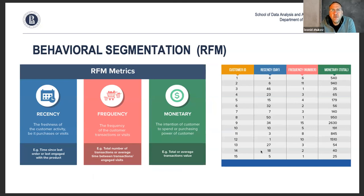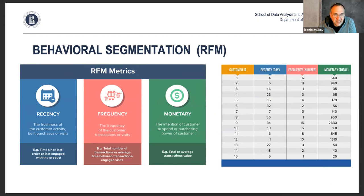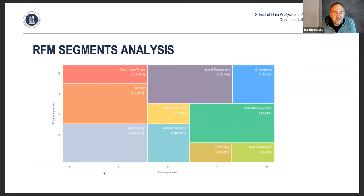One popular way to segment customers based on behavior is the RFM metric — Recency, Frequency, and Monetary. Recency is the freshness of customer activity: when was the last time the customer interacted with a service? Frequency is how often the customer interacts within a selected time frame. Monetary is the value — how much money the customer spends on your services. Customers who visit frequently and spend a lot are obviously the most valuable.